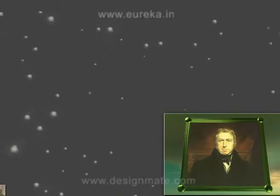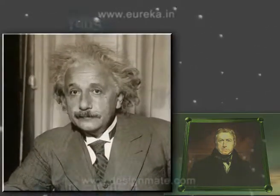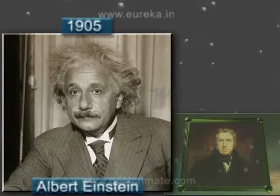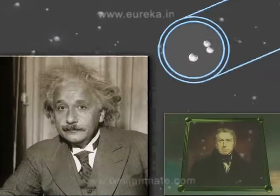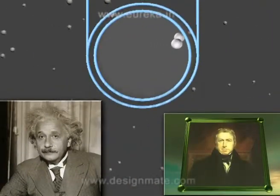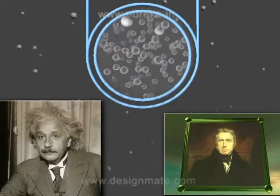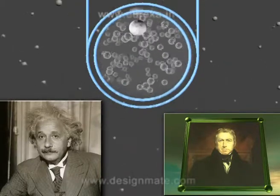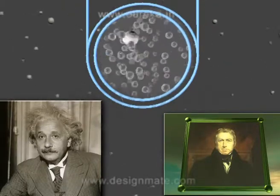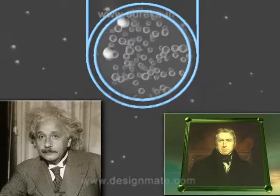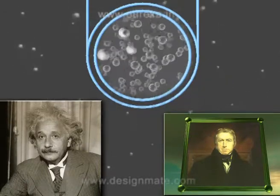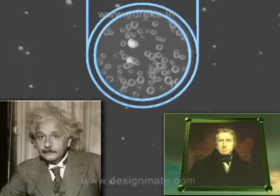It was finally explained in 1905 by Albert Einstein, who realised that it was caused by the invisible molecules of the fluid hitting the particles randomly from all directions. Let us try to understand the phenomenon of Brownian motion by performing a simple experiment.